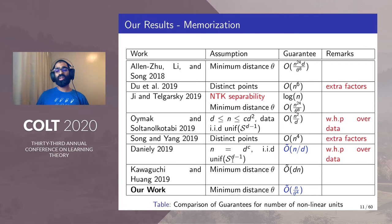That is, it has to be uniform over the sphere, and you can only consider n to be polynomially large in d. Kawaguchi and Huang has similar assumptions as ours, but they have an extra factor of d in their complexity.